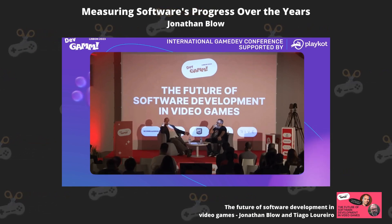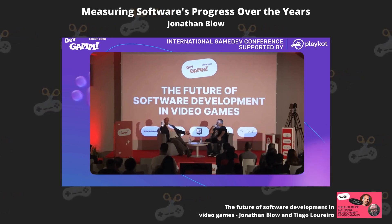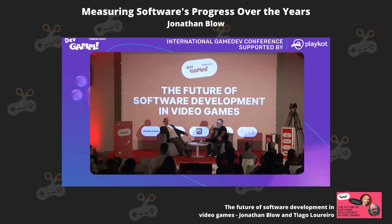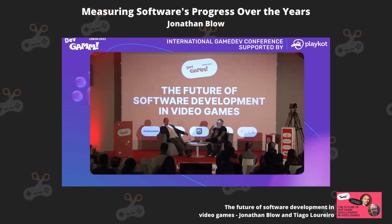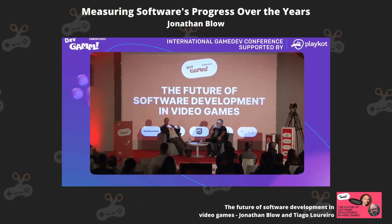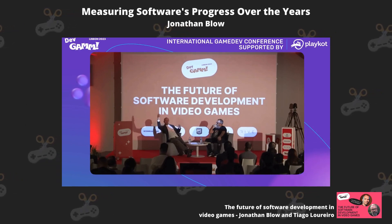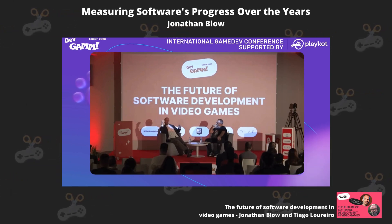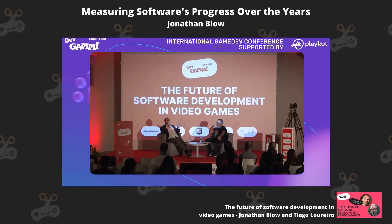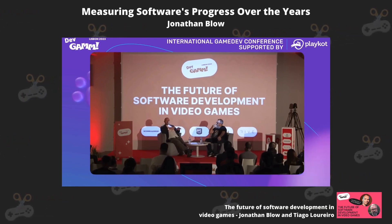How can we improve that? That's an important question. Every university has this field called computer science, but when you look at it, the serious part is really more like computer math — doing O(N²) analysis and proving things about programs. The analogy to physics as actual empirical science isn't really there.